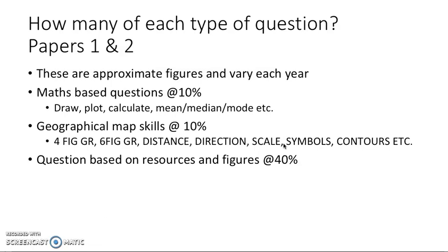Now, it's also important to realize that when you break them down for papers one and two, paper three is different. We'll look at that another time, but around 10% of the marks are based on mathematical questions. Things like drawing or plotting on a graph, calculating key figures, and looking at things like the mean, median, mode, range, etc. There's also about 10% of the marks are given over to geographical map skills. And again, we'll go through those in more detail, but there will be another video on the map skills. And if you look at the playlist, there will be a skills playlist as well. And then around 40% of the questions will be based on resources and figures. So you've got to make sure you read the information in the question to help you. That's really important.